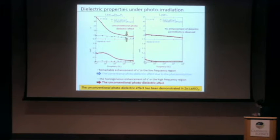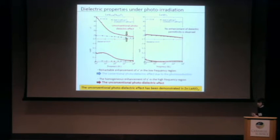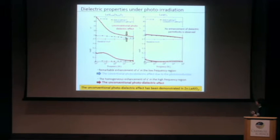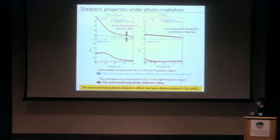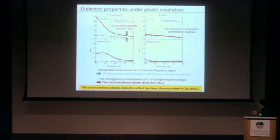Please look at the high-frequency region. You can find a homogeneous enhancement of dielectric permittivity — this is the most important result in my talk. This behavior is different from the conventional photodirected effect, and the tangent delta is too low for a conventional photodirected effect. So this is the unconventional photodirected effect. Furthermore, no enhancement is observed in pure lanthanum aluminate, suggesting that the heterovalent zinc substitution is important for the emergence of this effect.